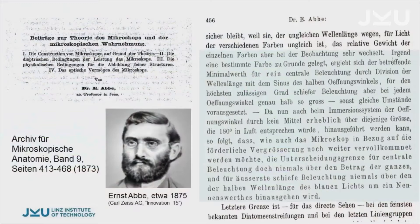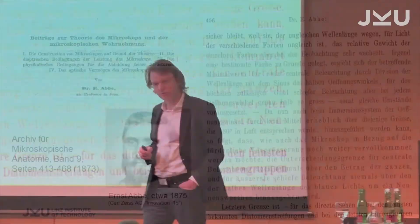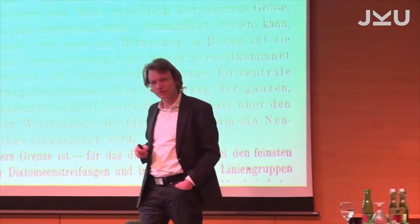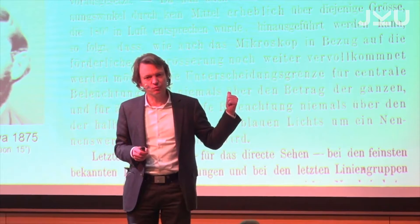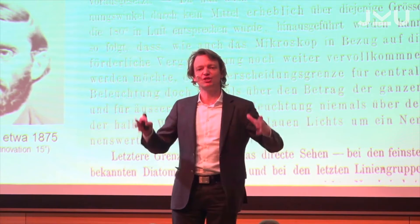I have to read it in German because it was written in German: irgendeine bestimmte Farbe zugrunde gelegt, ergibt der betreffende Minimalwert für rein zentrale Beleuchtung durch Division der Wellenlänge mit dem Sinus des halben Öffnungswinkels für den höchsten Grad schiefer Beleuchtung nur halb so groß. It was the style of the time not to write mathematical formulas — they spelled them out. 56 pages of theoretical physics, not a single formula.